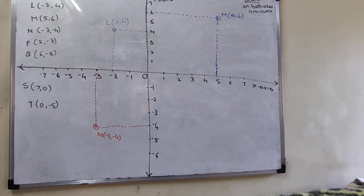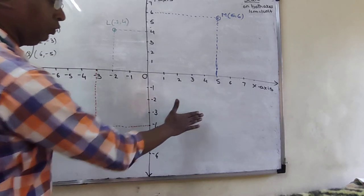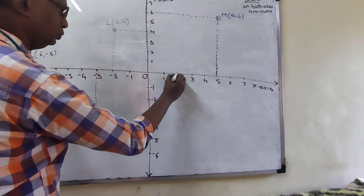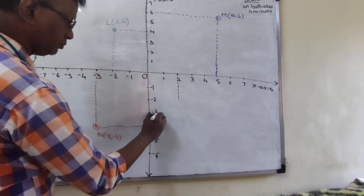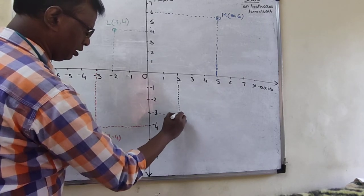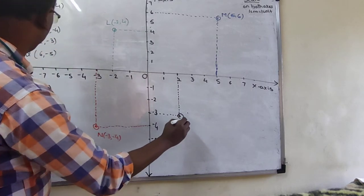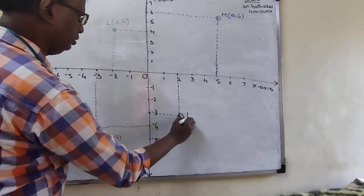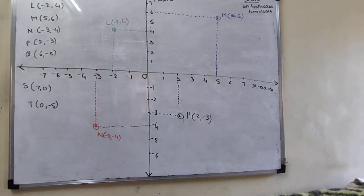Next, P(2, -3). Plus-minus means it is in the fourth quadrant. The x-coordinate is 2 and the y-coordinate is -3. Plot point P at (2, -3) in the fourth quadrant. Any doubt? Come to the next question.